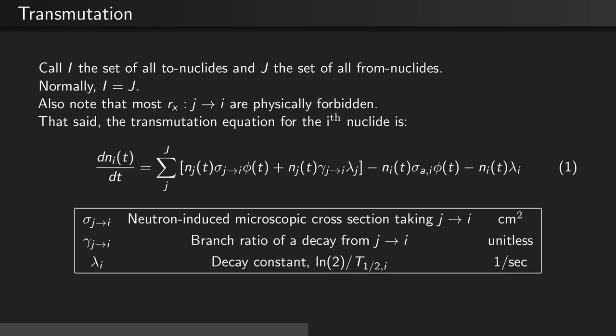That said, the transmutation equation for the i-th nuclide is: the time derivative of the concentration of the i-th nuclide equals the sum over all from-nuclides of the concentration of the from-nuclide times the cross-section that takes J to I times the flux, plus the concentration of the j-th nuclide times the branch ratio J to I times the decay constant of the j-th nuclide.